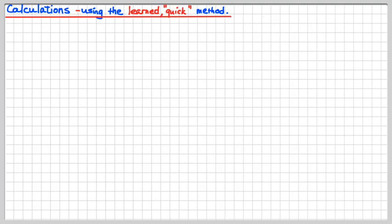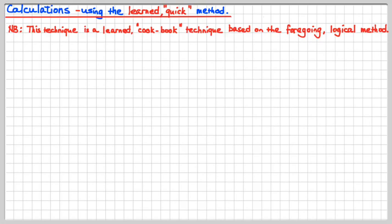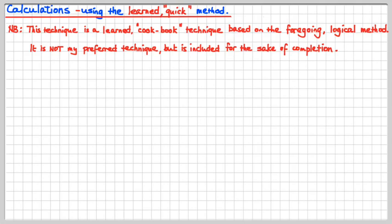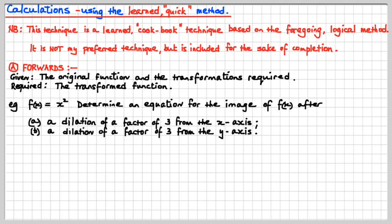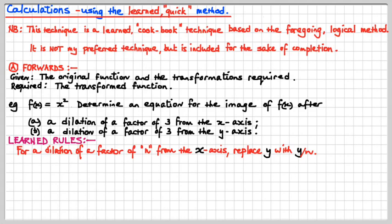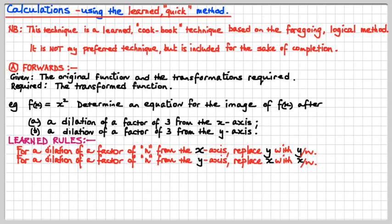Now here's the learned quick technique — I don't recommend this, but it's quick and effective. It's a cookbook technique based on the foregoing logical method, included for the sake of completion because just about everybody uses it. For the forwards technique: given the original function and the transformations required, the learned rules are: for a dilation of a factor of n from the x-axis, replace y with y/n; for a dilation of a factor of n from the y-axis, replace x with x/n.